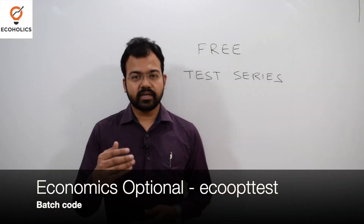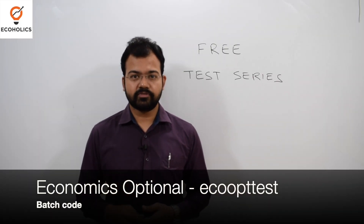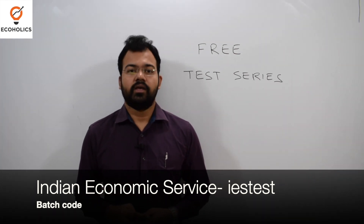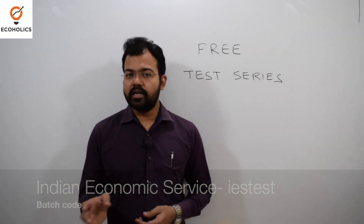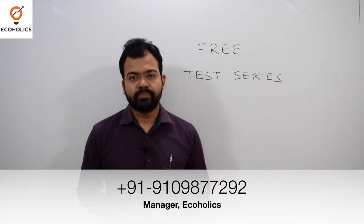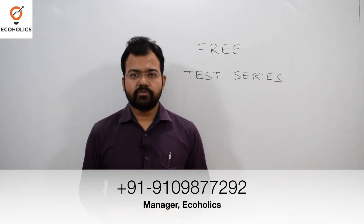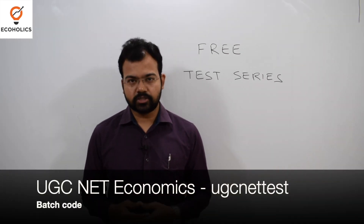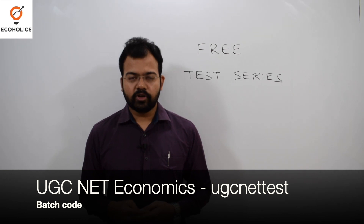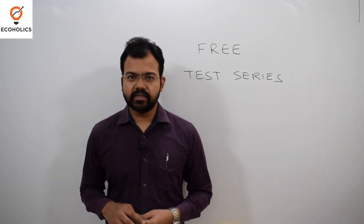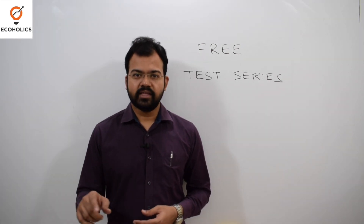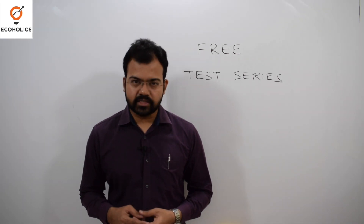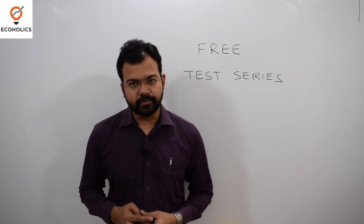What you have to do is click on the plus icon. If you click on that plus icon, it will ask for a batch code. These batch codes are given in the description of this video, or you can ask for any batch code on the mobile number shown on your screen. For example, if you are opting for UGC Net, then 'UGC Net Test' is the batch code. You click the plus sign, apply the batch code, and that request is sent to the administrator, who will then add you.